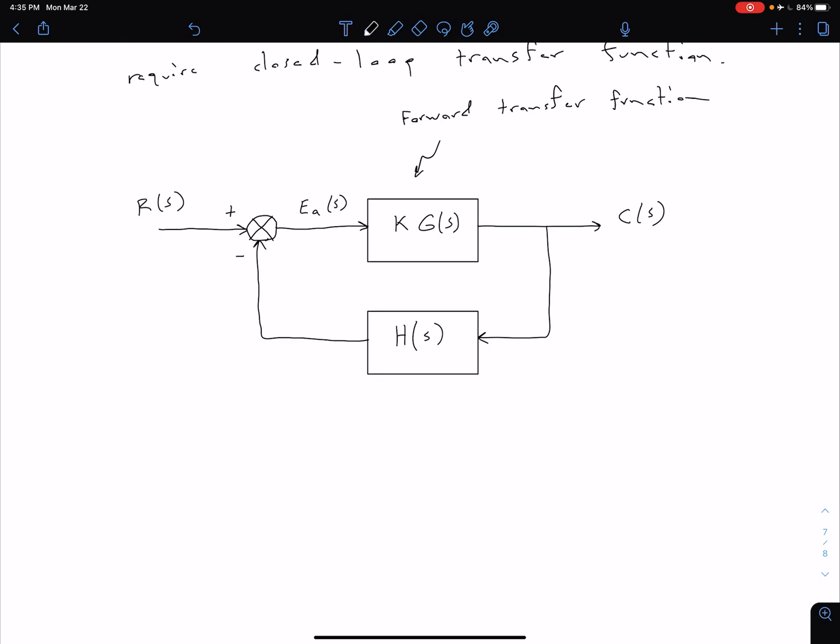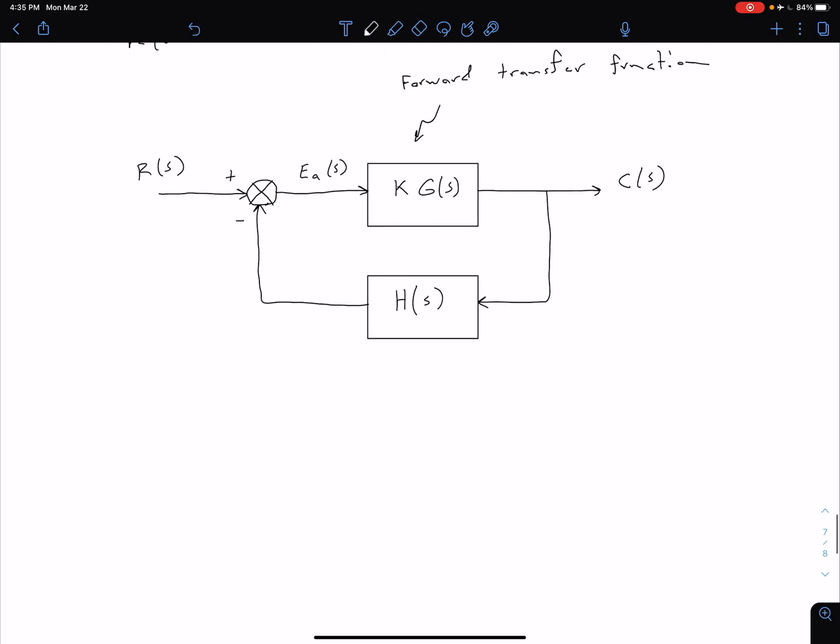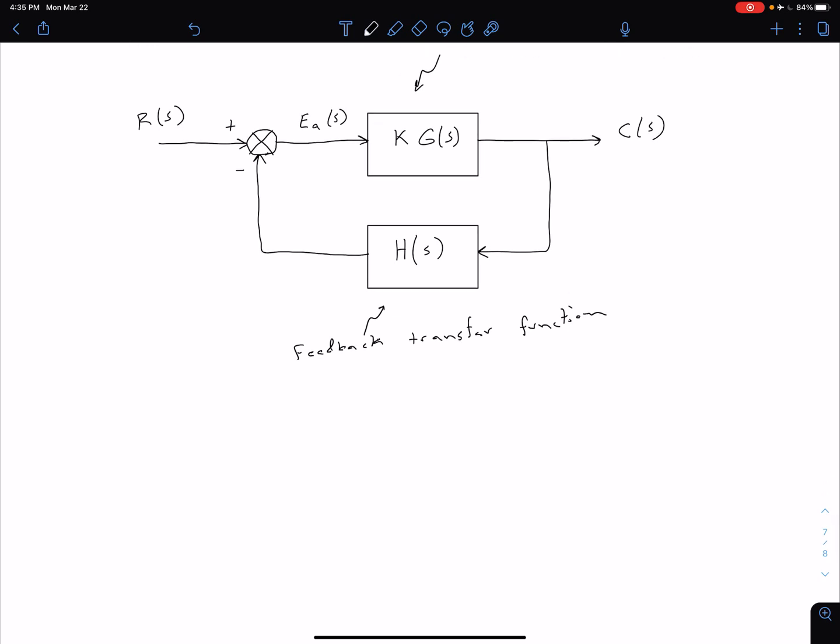Sometimes you'll see the K in a separate block as well. And then down here with our H, this is going to be our feedback transfer function. And so as you can see, we also have negative feedback in this case. We're going to consider the case of positive feedback a little later on, but for now we're just going to consider our negative feedback.